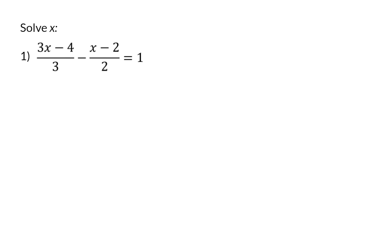Here, once again, my first step will be to write everything in fraction form, and then to get the common denominator on both sides, and in this case that will be 6. On the left-hand side, my first fraction's denominator has to be multiplied by 2 to form 6, so the numerator also has to be multiplied by 2.